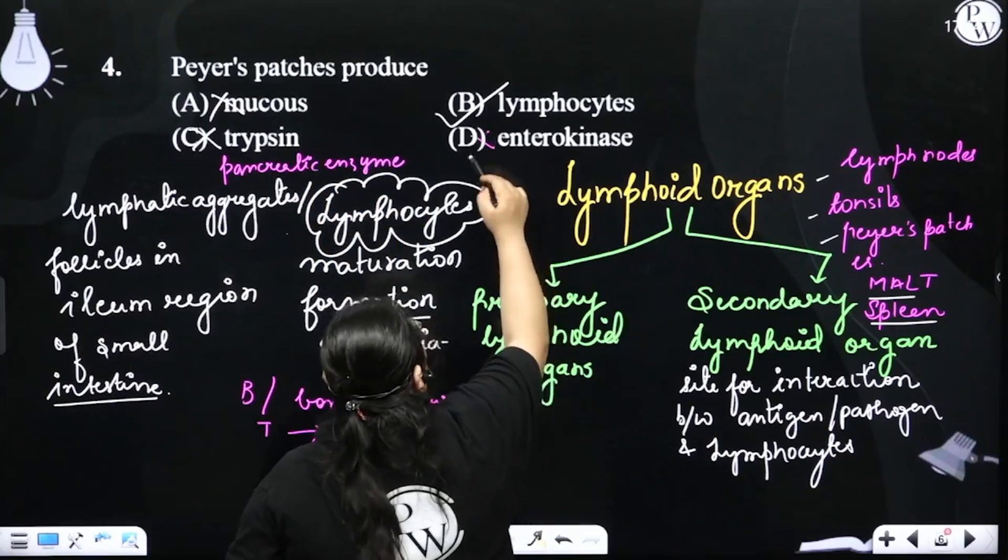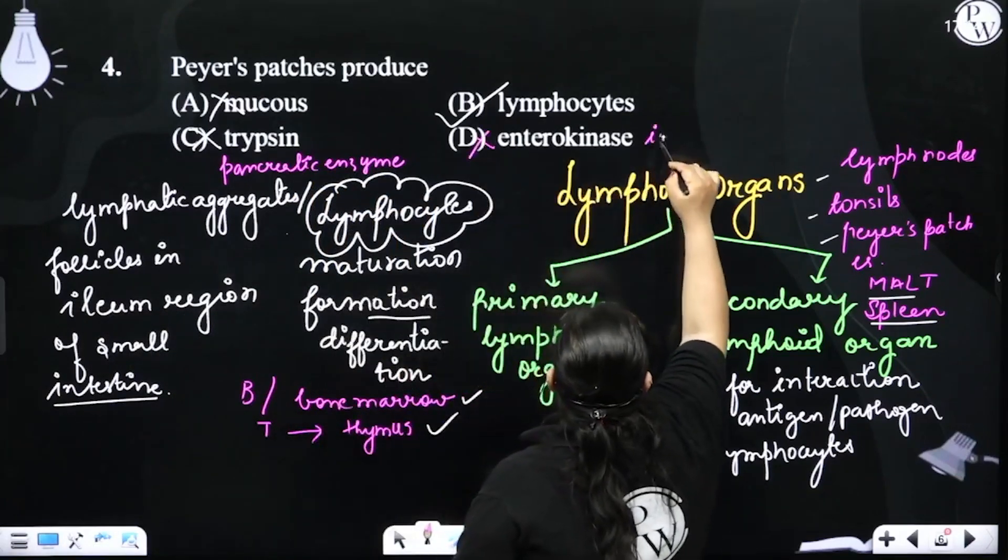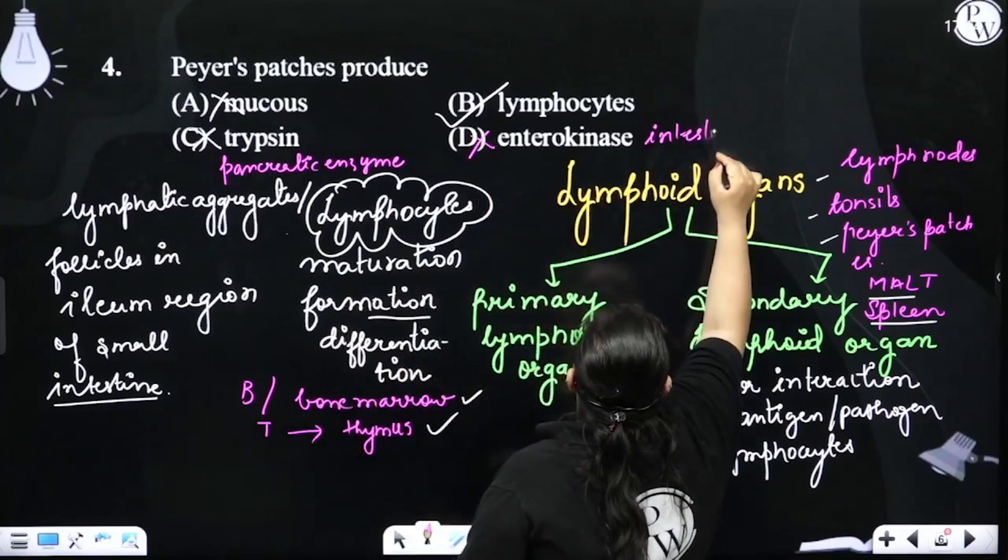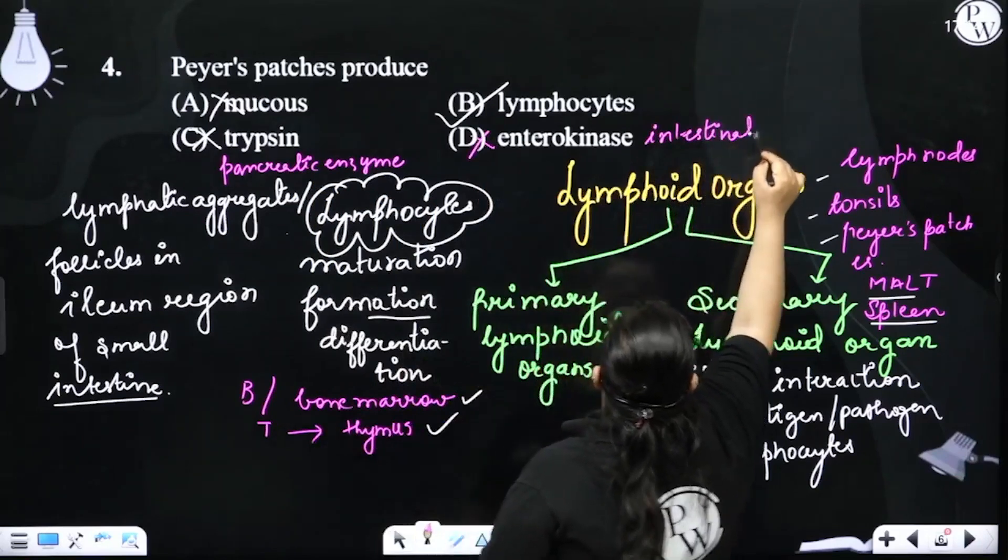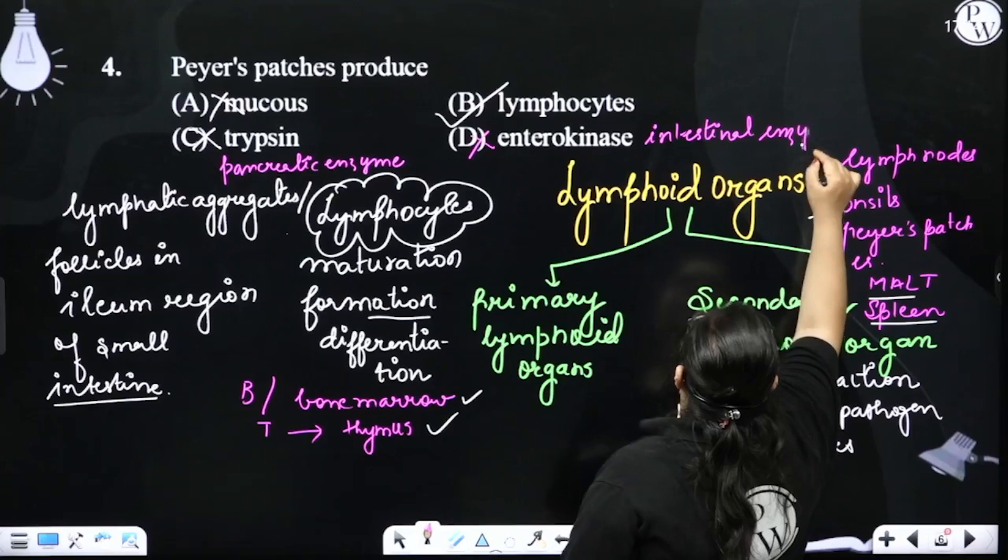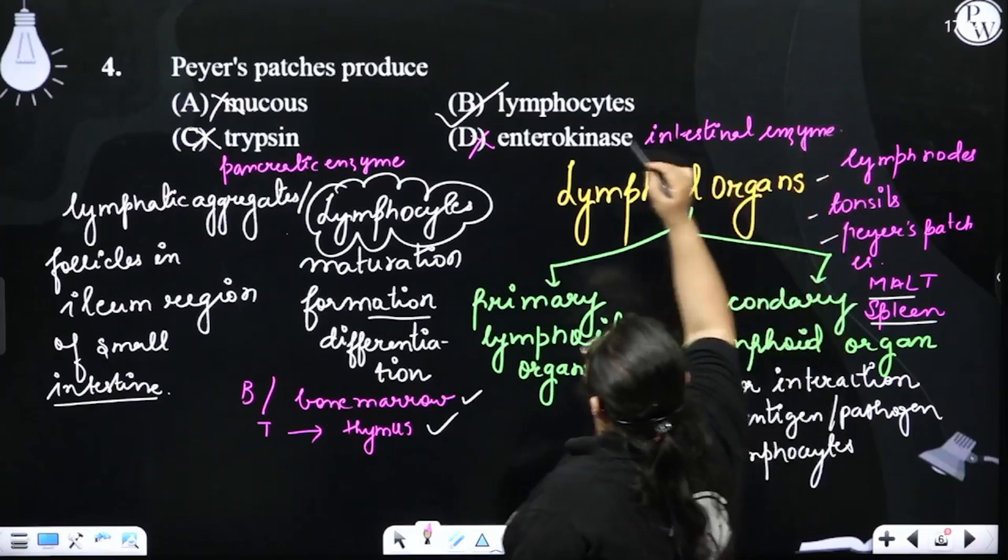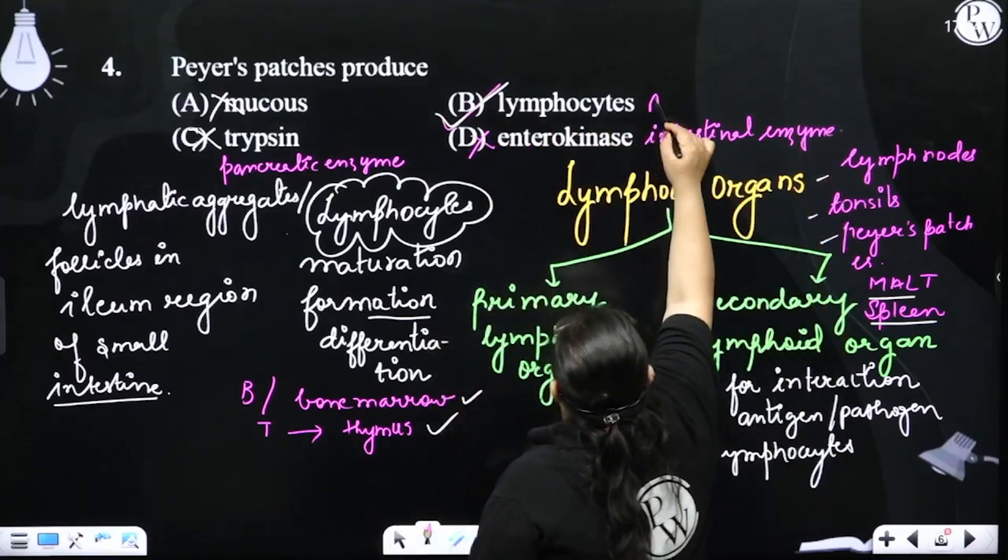Enterokinase is also an enzyme, present in intestinal juices. It is an intestinal enzyme. So the answer is going to be B, lymphocytes.